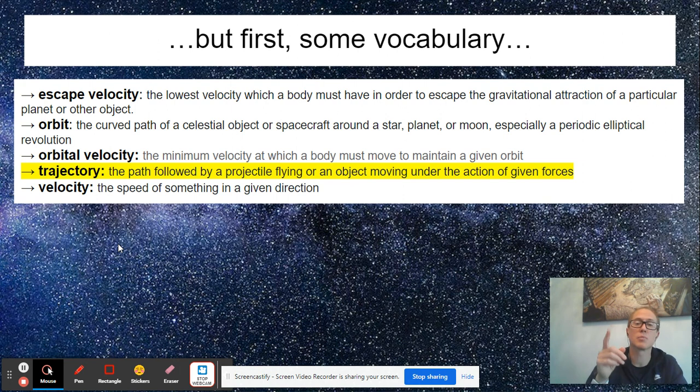And then velocity, it is speed, but it's speed with direction, and that's what's important to know about velocity. It's 57 miles per hour traveling west, not just the number, 57 miles per hour.